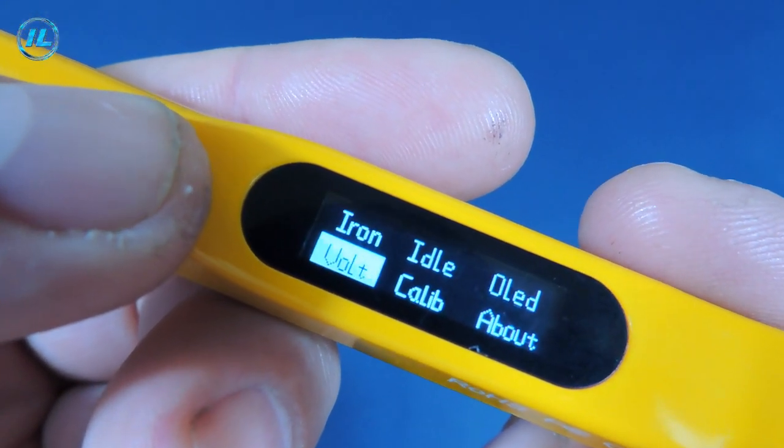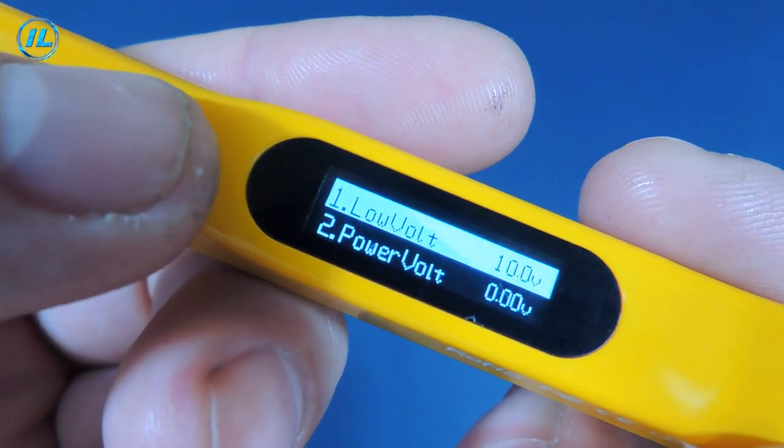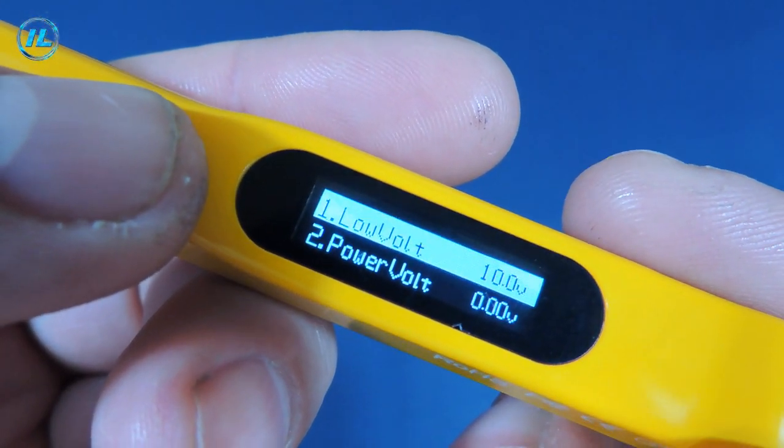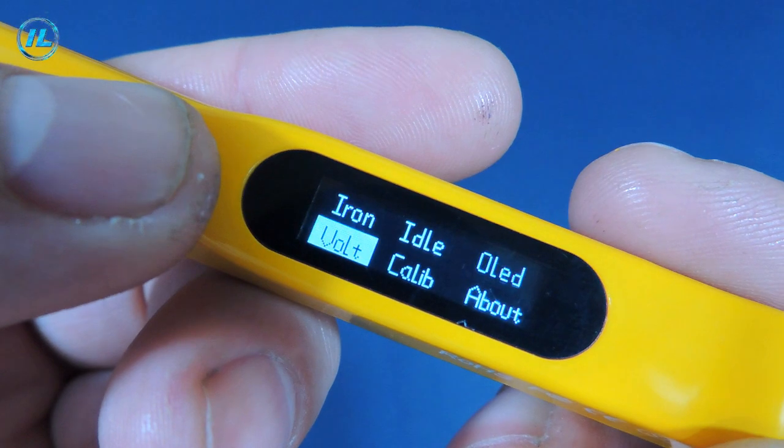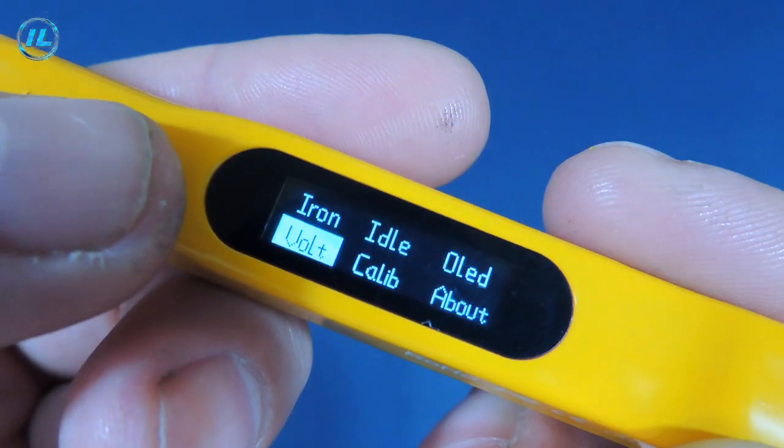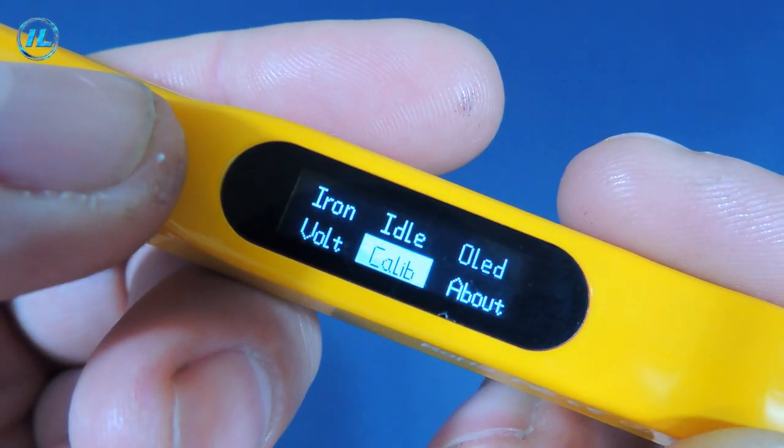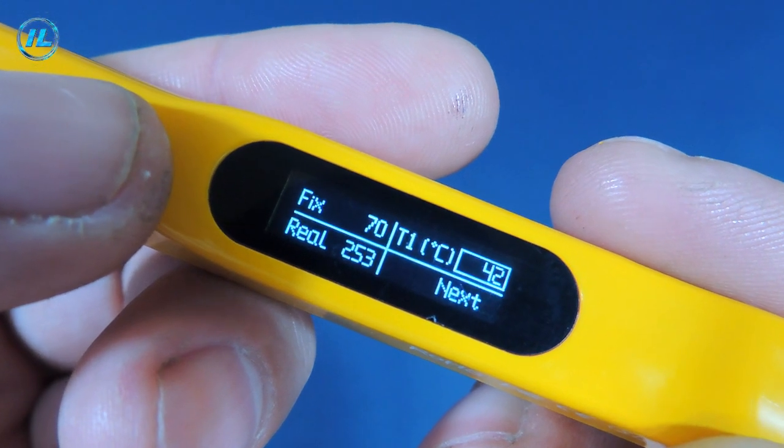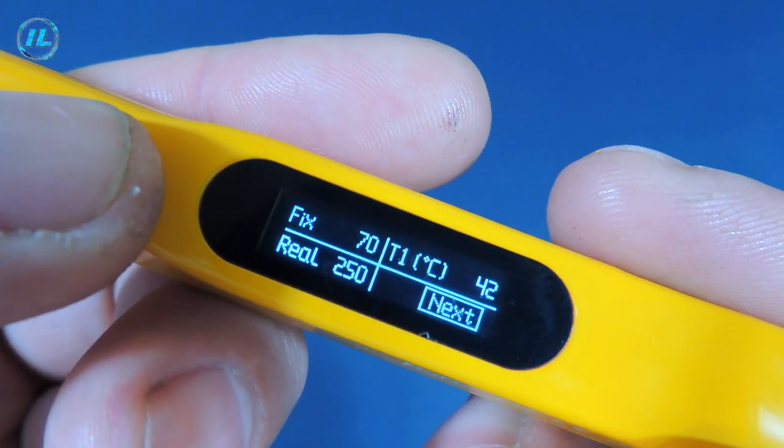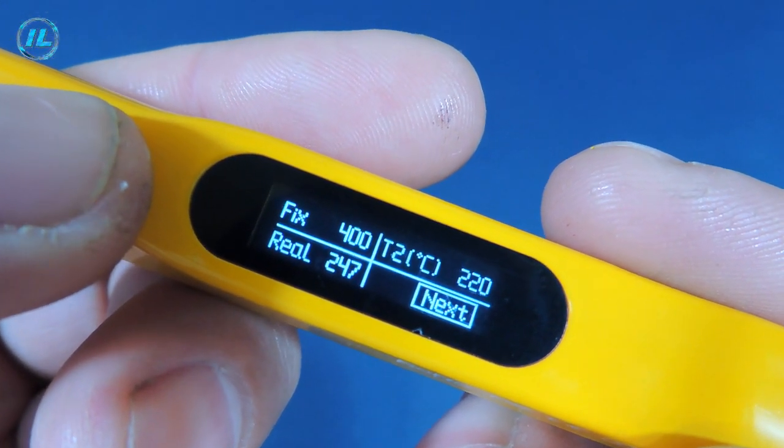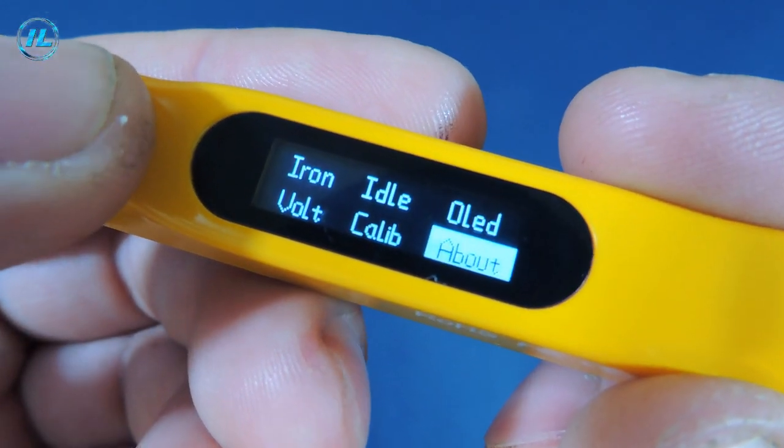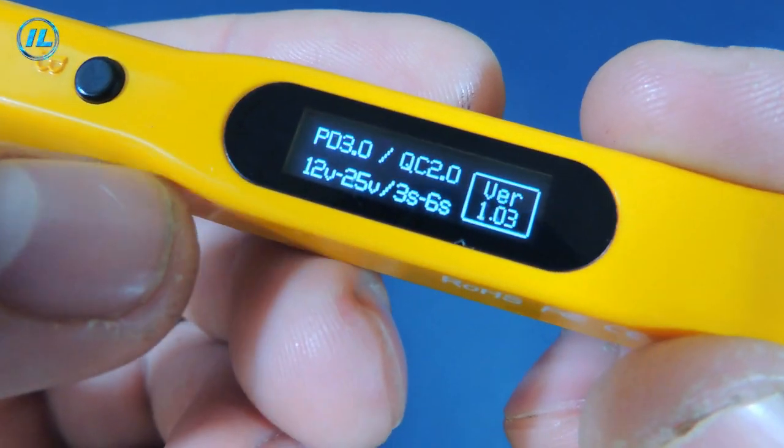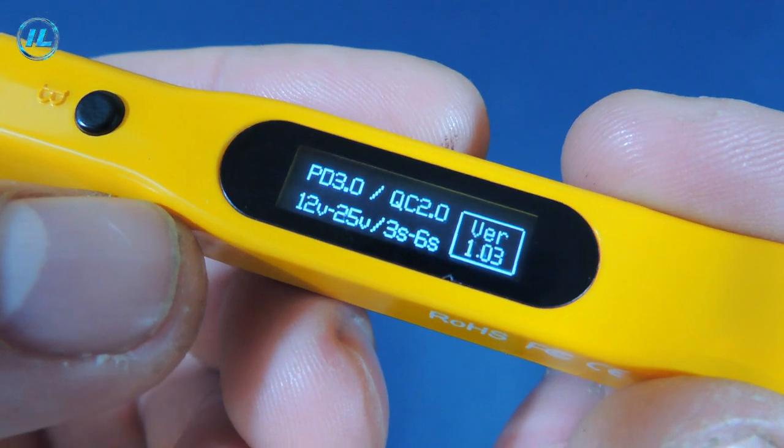The next item is Volt: low voltage protection and power supply voltage compensation. Next item, temperature calibration. And the last menu item is information about the soldering iron and the firmware version.